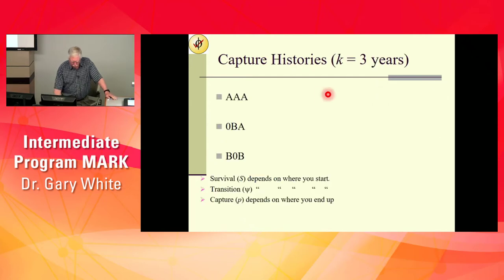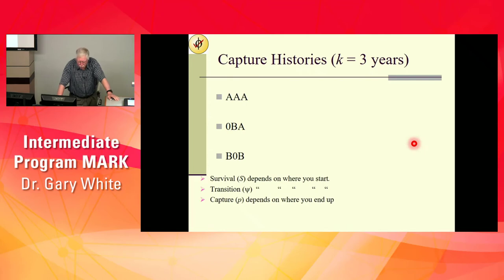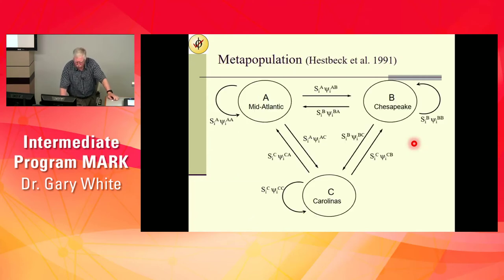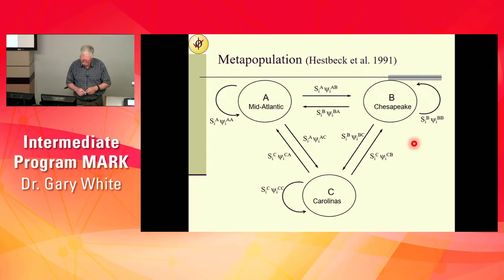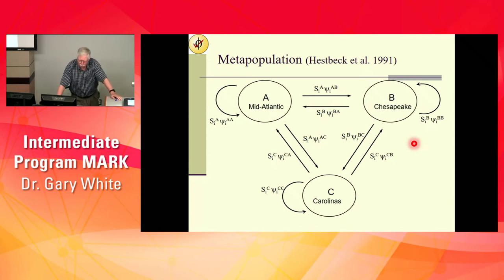Here are some example capture histories. A couple of key points: survival depends on where you start, transitions depend on where you start, and capture probability depends on where you end up. Now let's look at the geese — this Canada goose study was what prompted the development of multi-state models. It was published in 1991.